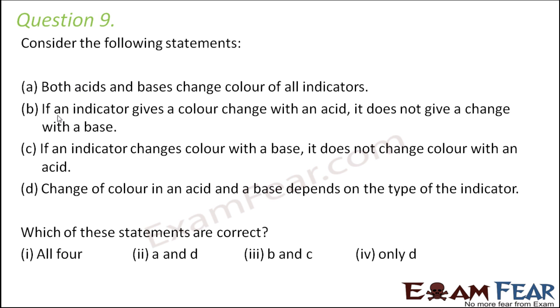So the first statement says that both acids and bases change color of all indicators. Now let us think of the blue litmus paper. So when the blue litmus paper is put into a base there is no change in color. Blue remains blue. Similarly when the turmeric paper is put into the acid there is no change in color. The turmeric paper still remains yellow. So this statement is not correct.